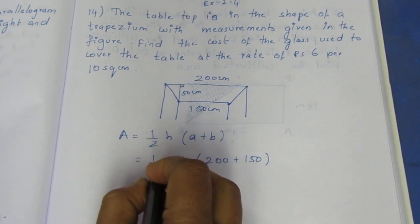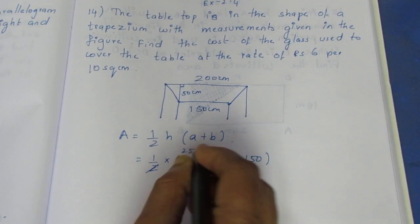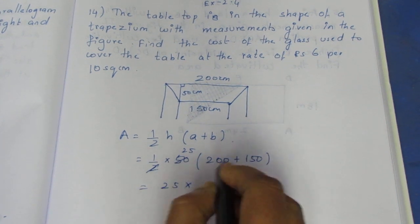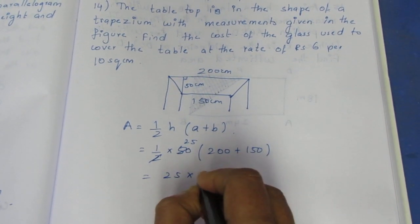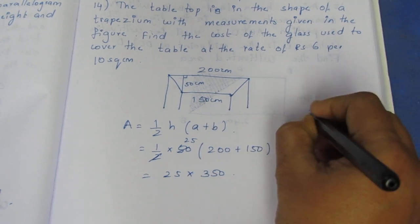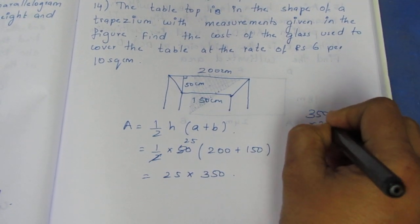Canceling, we get 25 times 25. Now 25 into 2 is 350. So 350 into 25.